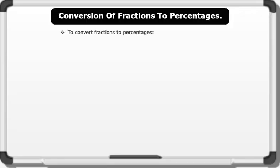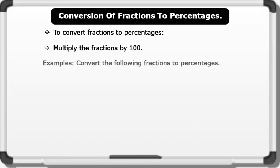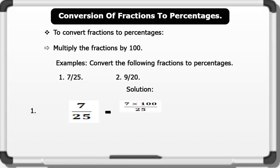To convert fractions to percentages, we simply multiply the fraction by 100. Let's see some examples. Convert the following fractions to percentages: 1) 7/25, 2) 9/20. Solution 1: 7/25 — multiplying the fraction by 100: 7 times 100 divided by 25, this equals 28%.